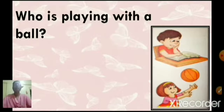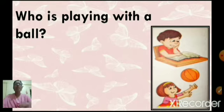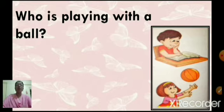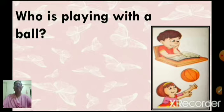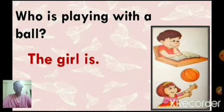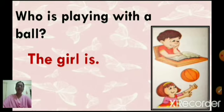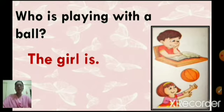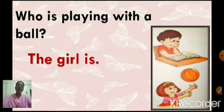Next one. Again look at this picture. Who is playing with a ball? You can see one boy and one girl. From this, who is playing with a ball? Is the boy playing or the girl playing? See in the question, is is there. The girl is. Who is playing with a ball? The girl is. You can see the girl is playing with a ball. What is the boy doing? He is studying.